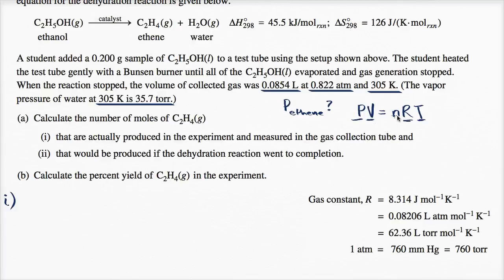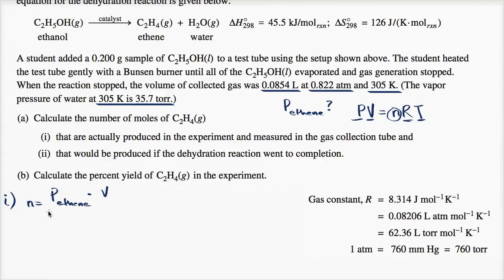To find the number of moles, divide both sides by RT, giving us: N equals the partial pressure of ethene times the volume, divided by R times T.